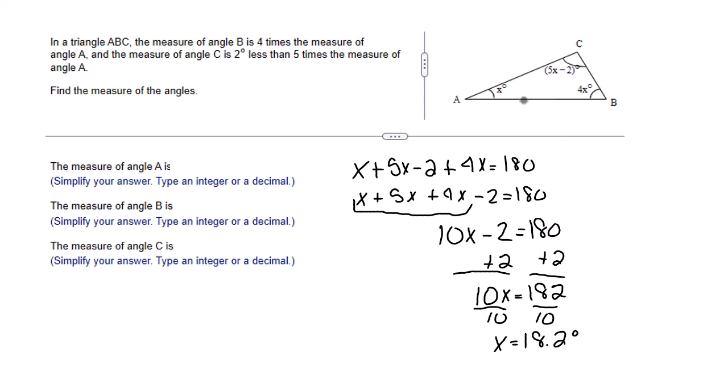We can fill that in right here. 18.2 degrees. Now to figure out this angle, all we have to do is put 18.2 in for X. Let me write the angle first. 5X minus 2. I put 18.2 in for X minus 2. 5 times 18.2 minus 2 turns out to be 89 degrees.